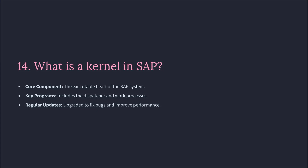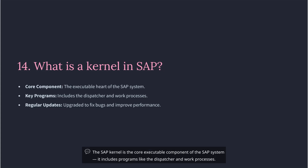Question 14: What is a kernel in SAP? The SAP kernel is the core executable component of the SAP system. It includes programs like the dispatcher and work processes. Kernel upgrades are done to fix bugs, improve performance, or add new features.